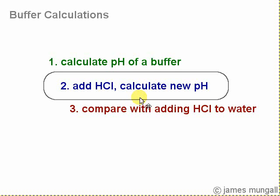So on to the second part of this example question on buffer calculations. This is going to be the bit where we add some HCl to the buffer solution and see what happens to the pH.